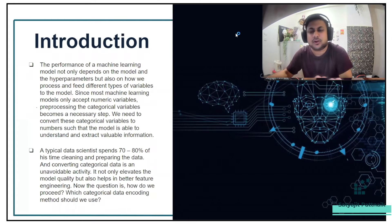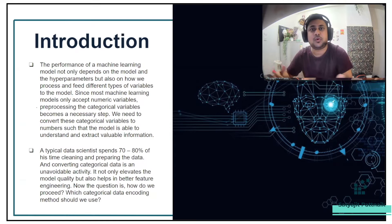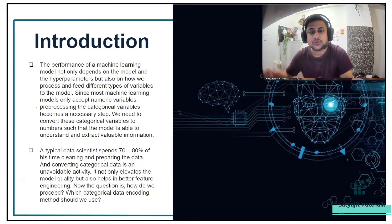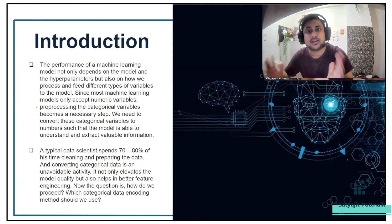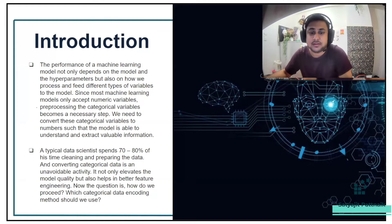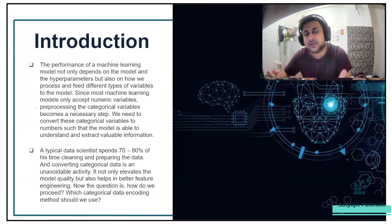Since all machine learning models accept only numerical variables, pre-processing categorical variables becomes a necessary and very important step. We need to convert categorical variables to numbers so that the model is able to understand and extract the necessary information from the data. A typical data scientist spends around 70 to 80 percent of their time cleaning and preparing data, and converting categorical data is an unavoidable mandatory activity. It not only elevates model quality but also helps in better feature engineering.